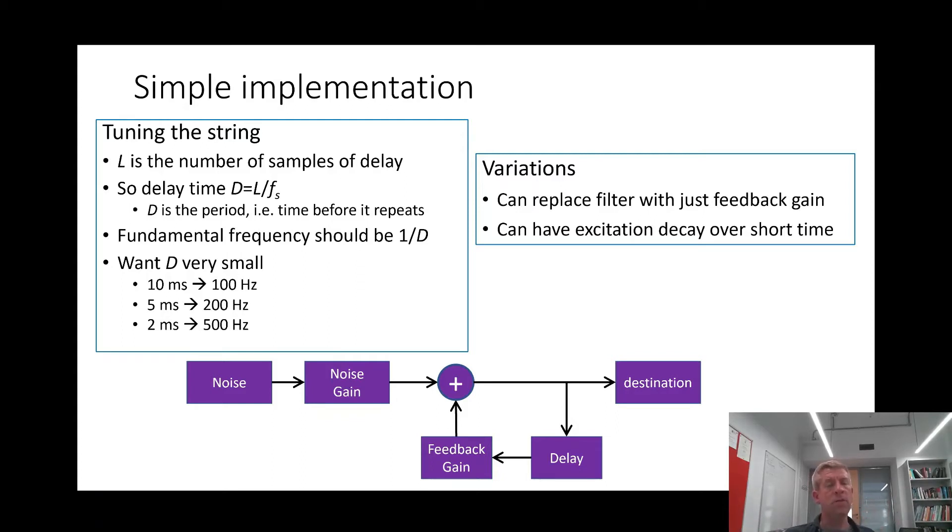So for instance, if the delay is 10 milliseconds then one over that delay gives you a frequency of 100 hertz, and that's still a fairly low frequency. But if it's around 2 milliseconds then you get 500 hertz, and all of these values, 1, 2, 5, 10 milliseconds, they're all in the audible range.